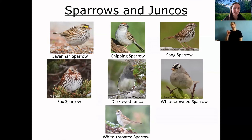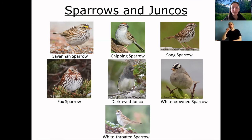Moving into sparrows and juncos — sometimes difficult to identify, especially because sparrows are often small brown birds. Look at the patterns on the breast and belly as mentioned earlier, and note that these birds have a strong conical-shaped bill they use for cracking seeds open. Take your time with sparrows as well.